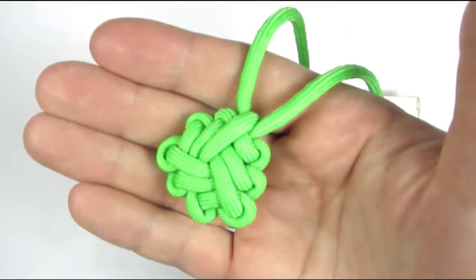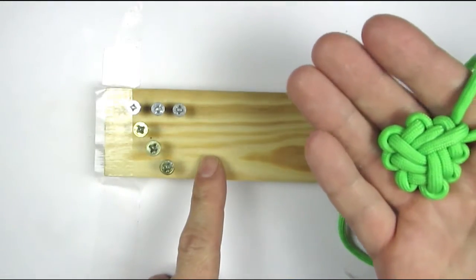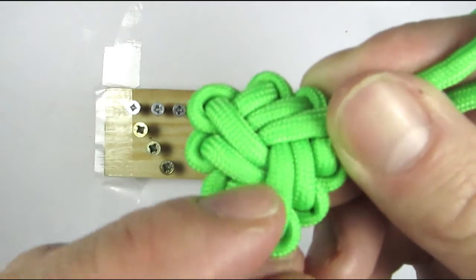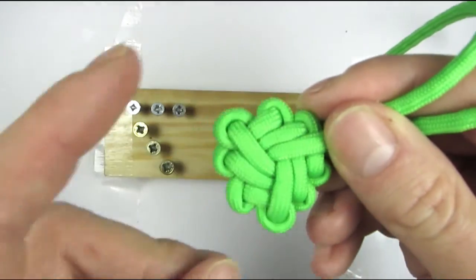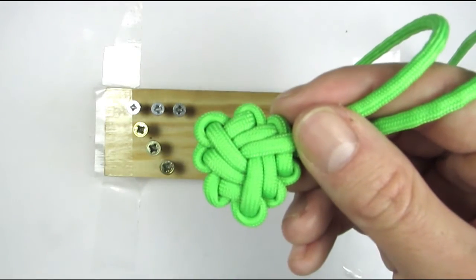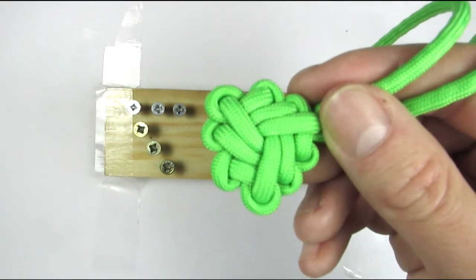So here you can see the 3x3 BAO treasure knot, and we're going to tie one using a jig. It is called a 3x3 BAO because it has three sections of three ports at the top which give it its look. So let's tie one.